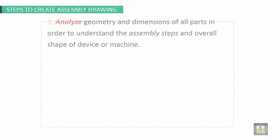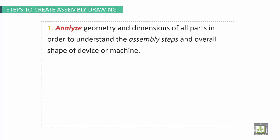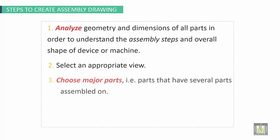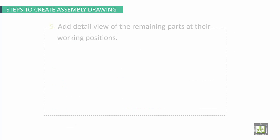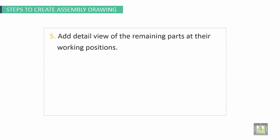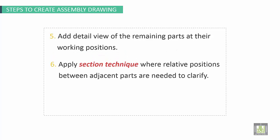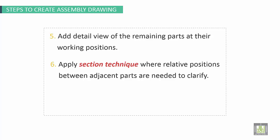Steps to create assembly drawing. First, analyze geometry and dimensions for all parts in order to understand the assembly steps and overall shape of device or machines. Second, select an appropriate view. Third, choose major parts that means parts that have several parts assembled on. Finally, draw a view major parts according to a selected view. This is point number four. Point number five, add detail view of the remaining parts at their working position. Six, apply section technique where relative positions between adjacent parts are needed to clarify. Number seven, add balloons, notes and dimensions if any. Number eight, create bill of materials.